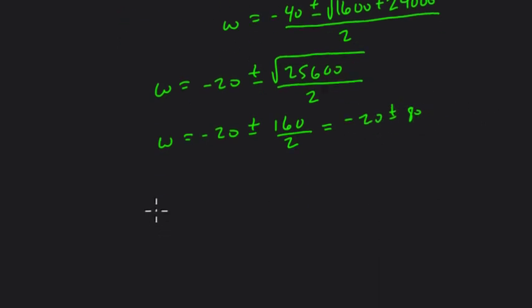So there are two values for W. Let's see if they're both reasonable. W could equal negative 20 plus 80, and W could equal negative 20 minus 80. Now negative 20 plus 80 is 60, that seems reasonable. Negative 20 minus 80 is negative 100. That's not reasonable because we're dealing with dimensions of a soccer field. You can't have negative 100 for a dimension. So this tells us that W is 60.